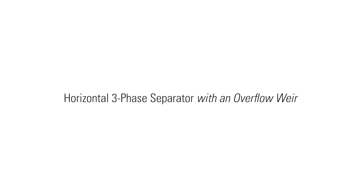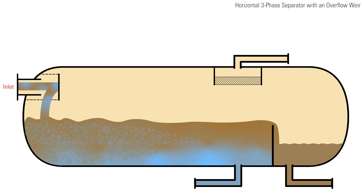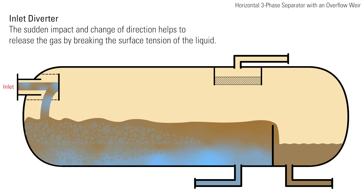In a horizontal three-phase separator with an overflow weir, fluid enters the vessel through an inlet and immediately hits an inlet diverter. This sudden impact and change of direction helps to release the gas by breaking the surface tension of the liquid.